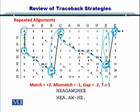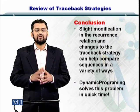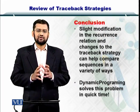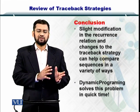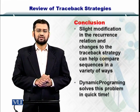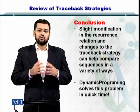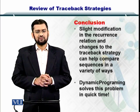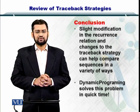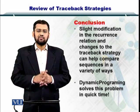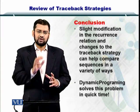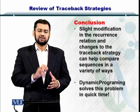These traceback strategies have allowed us to elicit global, local, repeated, and other types of alignments. In conclusion, the take-home message is that slight modifications to the recurrence relationship and the traceback strategy can help you find various kinds of alignments from biological sequences. Because this is a dynamic programming approach where you are computing only one element at a time, this can be done in a very short amount of time.